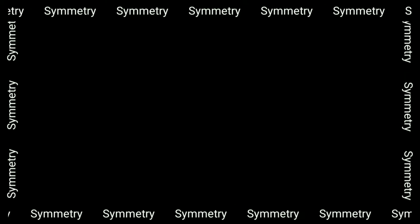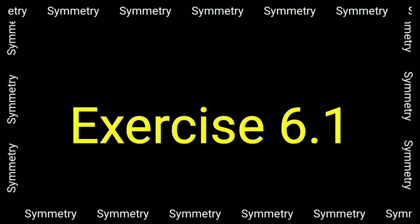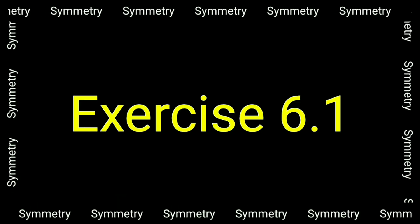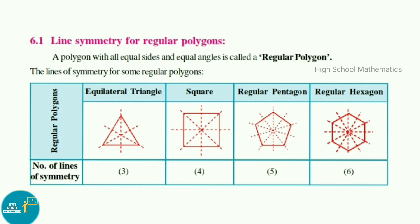Hello everyone, welcome to High School Mathematics channel. Today we are going to learn Class 7, Chapter 6: Symmetry, Exercise 6.1. Let us see the definition of line symmetry for regular polygons. A polygon with all equal sides and equal angles is called a regular polygon. Let us now see the lines of symmetry for some regular polygons.